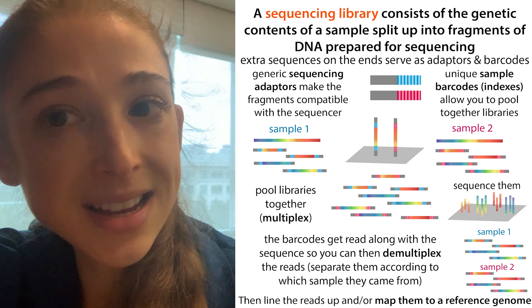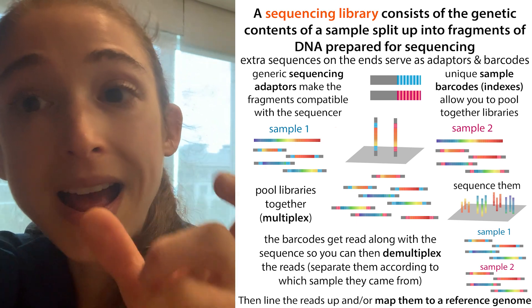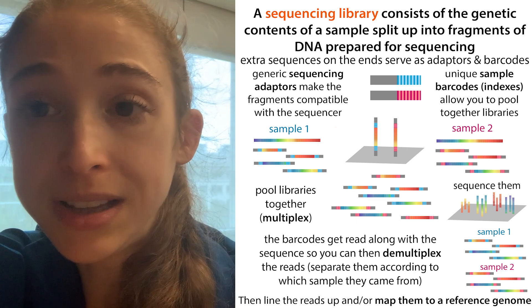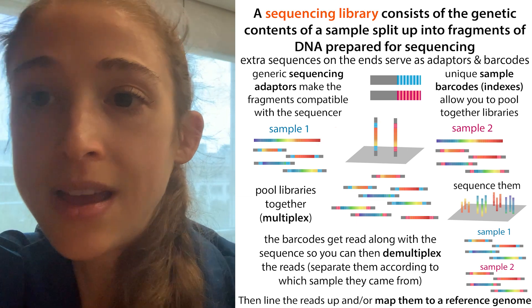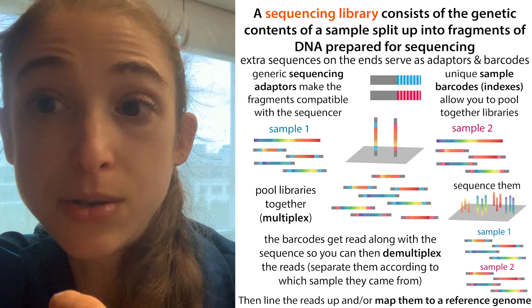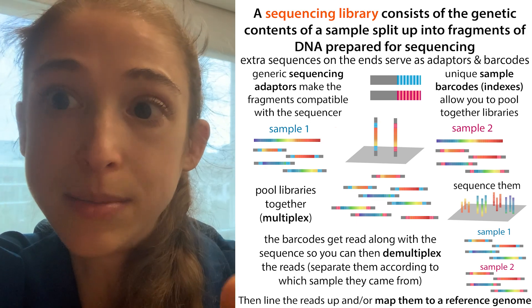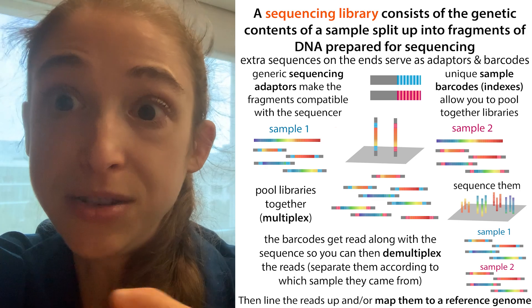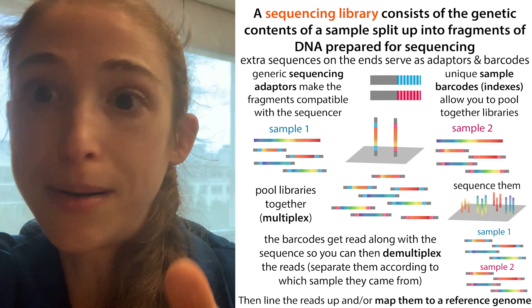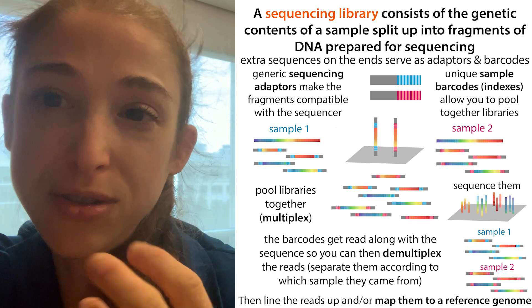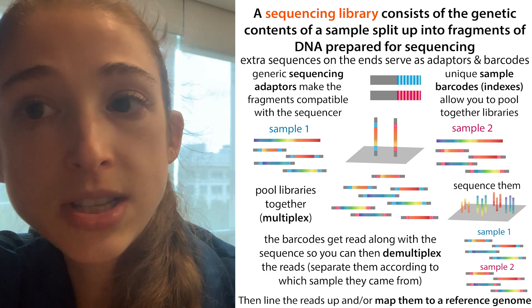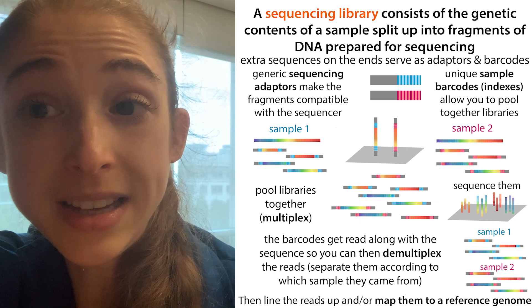Thanks to those indexes, you're able to separate out what came from which sample. Multiplexing is really cool and really helpful. There are a variety of different strategies for multiplexing — single indexes were used in the beginning, then dual indexes, then unique dual indexes, and the technology keeps getting more complex so that you can do more multiplexing. The barcodes are typically eight or ten nucleotides long.